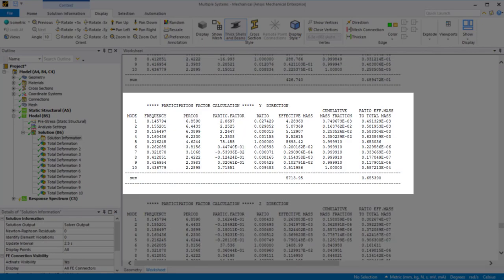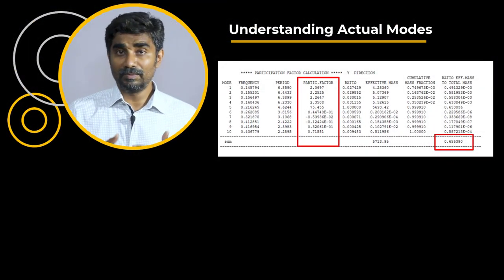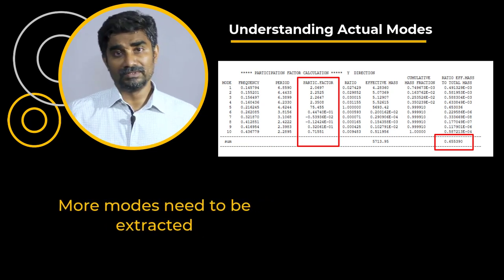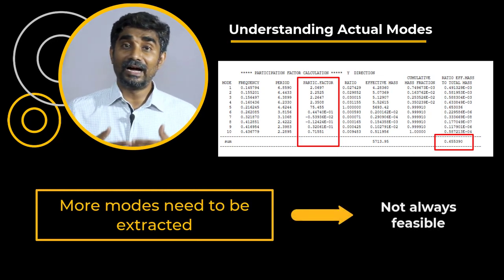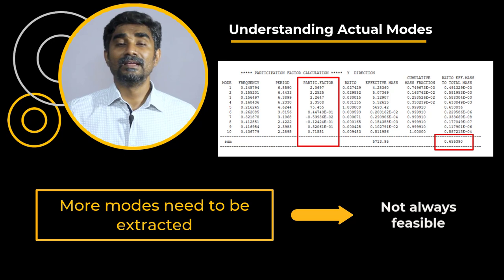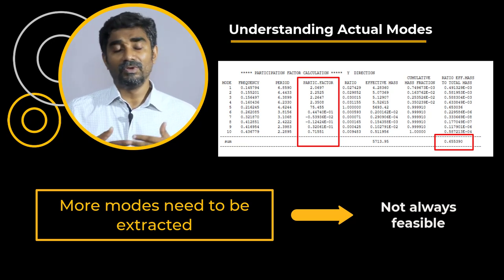While the participation factors of these cables are not negligible, they are very localized and thus have a lower contribution to the structural response of the system. This would indicate that to capture the appropriate response of the platform, which is of prime interest, we need to extract more modes. But it's not always feasible to extract a high number of modes, so let's discuss some tools to help with accuracy in case of fewer modes.